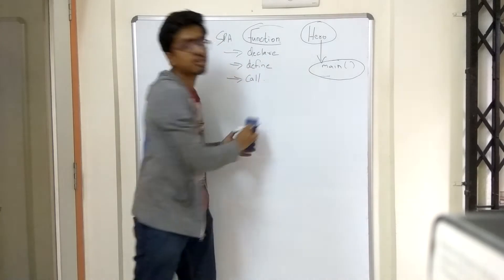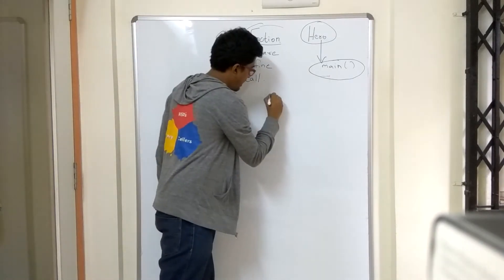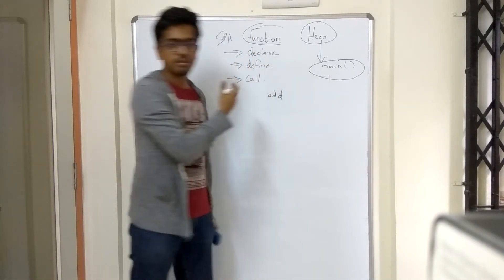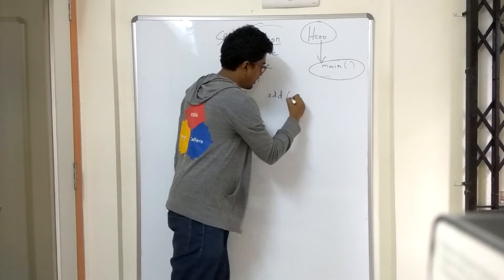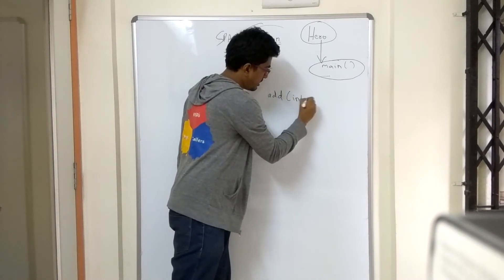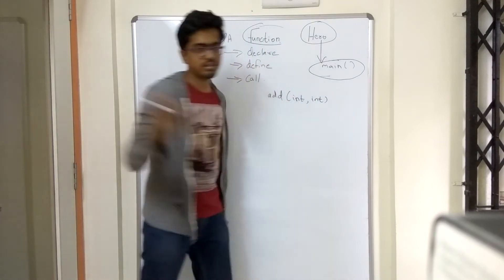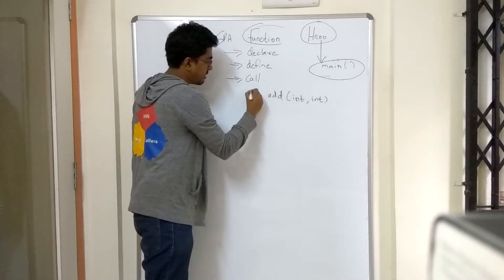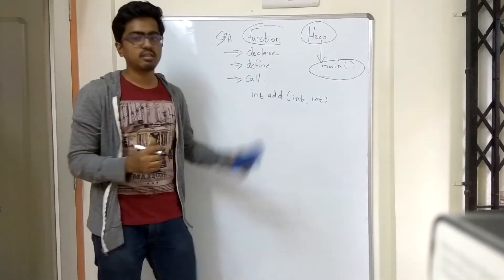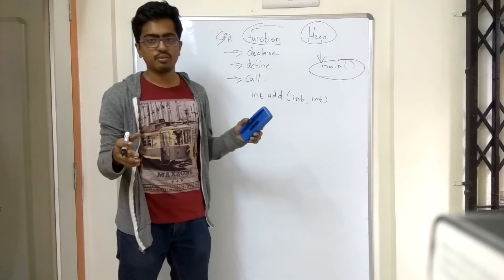So suppose there is a function called calculate that adds things. So my function will be add. It will take integers, two integers that it is supposed to add. And then it will return an integer. This is how a basic function is set up.